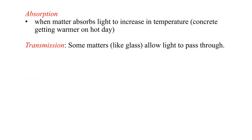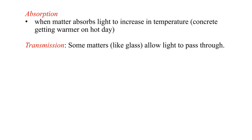Transmission — some matter like glass actually allows light to pass through. You can see that the way the material is made, light is able to go straight through the glass, and as a result, you're able to see what's on the other side of it.